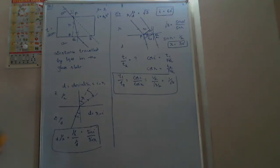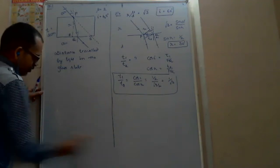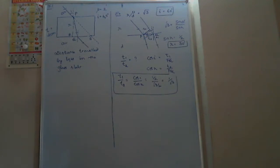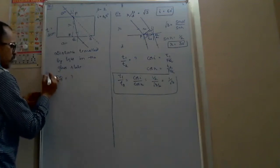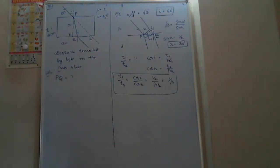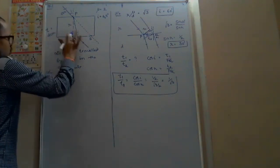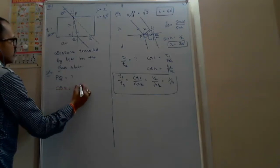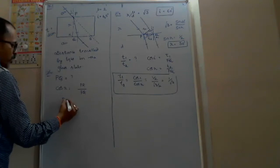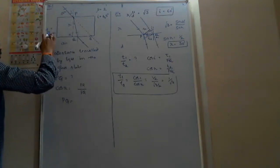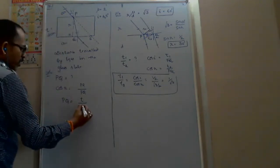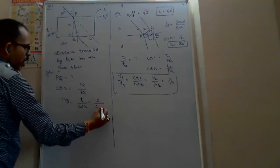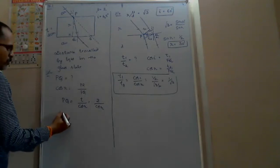First identify the distance traveled by light in the glass slab — that is PQ. In triangle PQR, cos r equals adjacent PR by hypotenuse PQ. Therefore PQ equals PR divided by cos r. PR equals the thickness, 2 centimeters. Using Snell's law: mu equals sine i by sine r, sine r equals sine 45 by root 2, giving sine r equals 1 by 2 root 2. So cos r equals root 7 by 2 root 2. Therefore PQ equals 2 divided by root 7 by 2 root 2, which equals 4 root 2 by root 7.